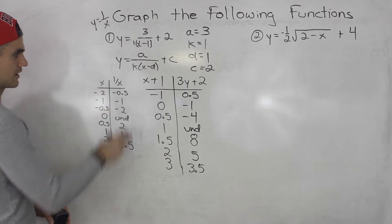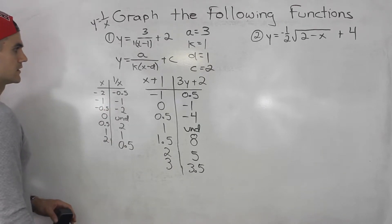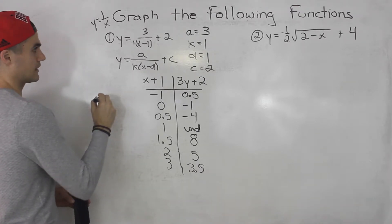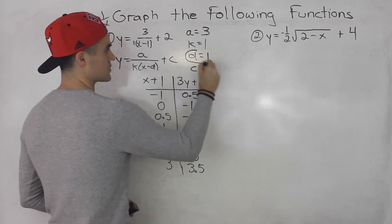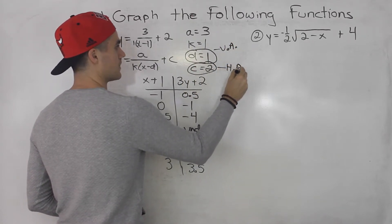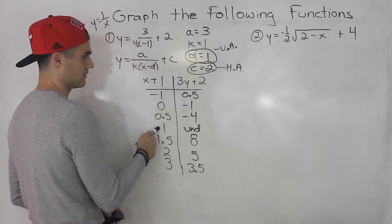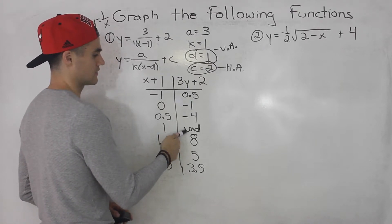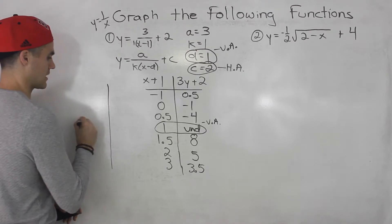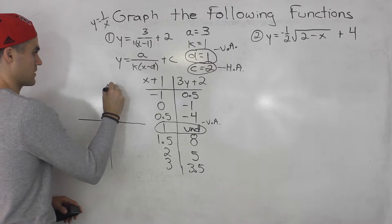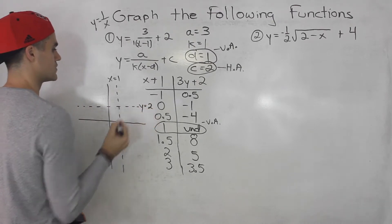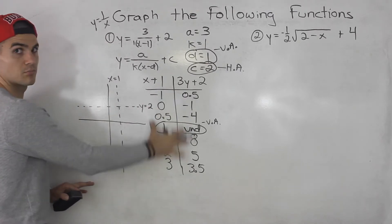We took those parent function points and transformed them. Now we can graph these points. With a reciprocal function, the d value gives the vertical asymptote and the c value gives the horizontal asymptote. You can also tell from the table — at x equals 1 the y value is undefined, confirming x = 1 as the vertical asymptote. Before plotting points, I always first plot the vertical asymptote at x = 1 as a dotted line, then the horizontal asymptote at y = 2.